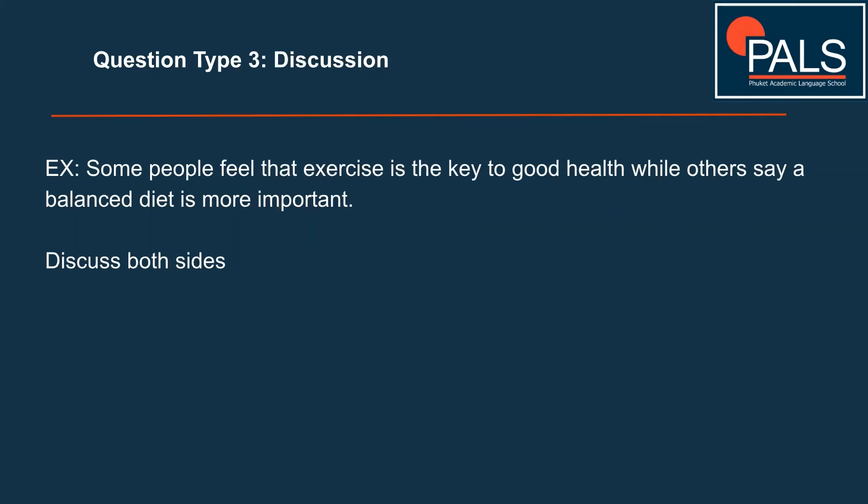Question type three is the straightforward discussion question. Here, you do not give your opinion. Example: 'Some people feel that exercise is the key to good health, while others say a balanced diet is more important. Discuss both sides.' No opinion is needed — it doesn't ask you for it. So just discuss both sides sensibly in your body paragraphs.